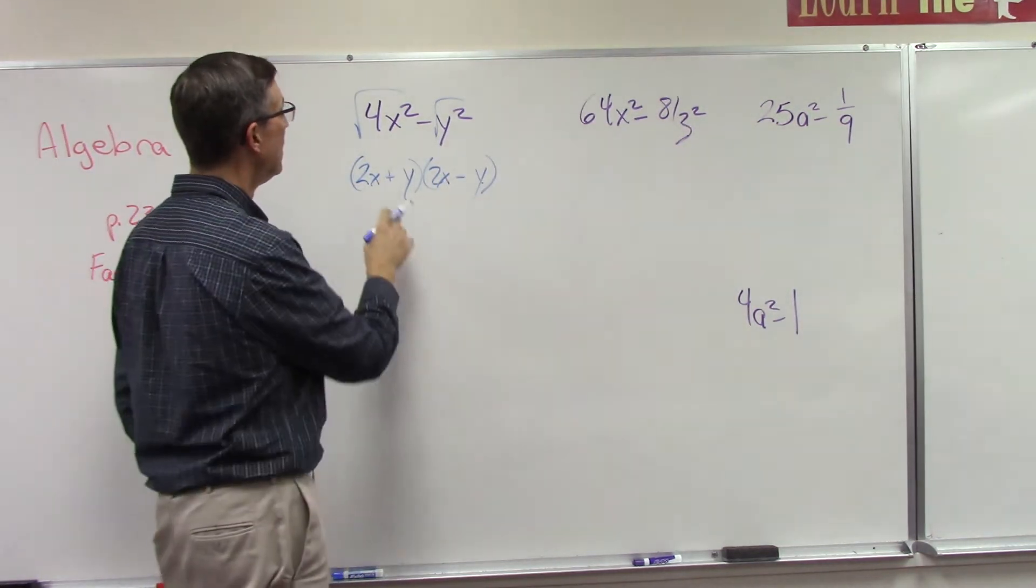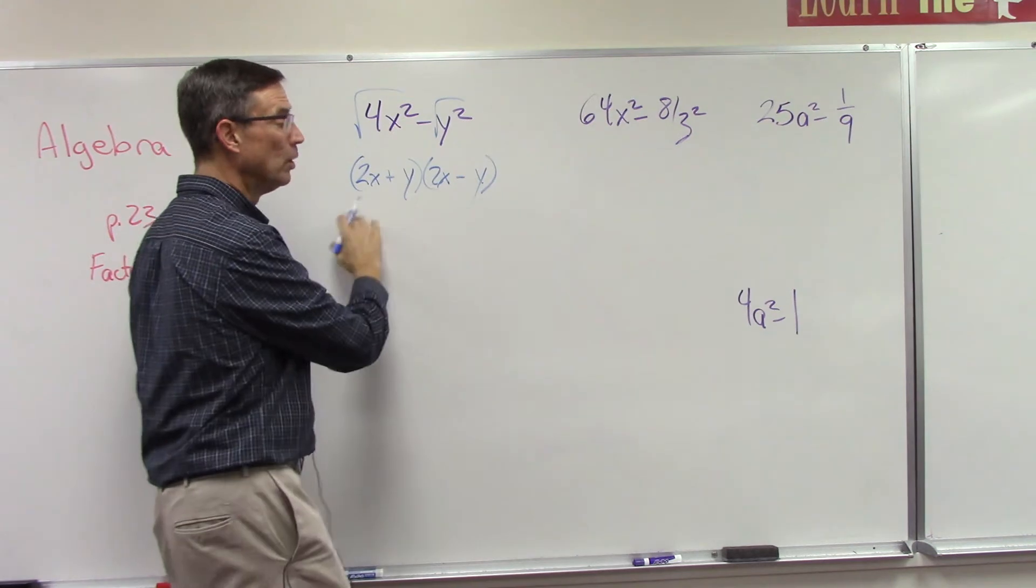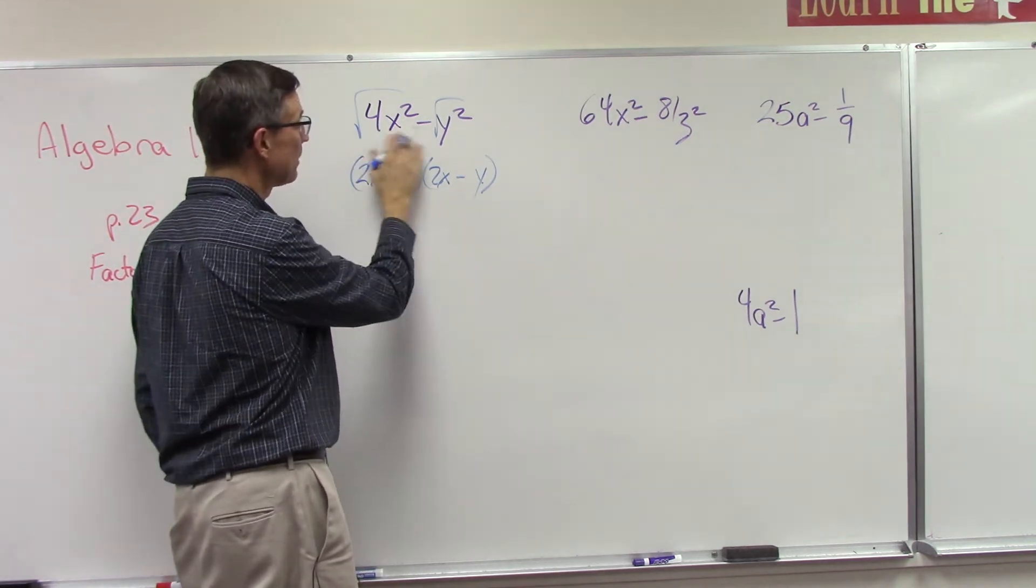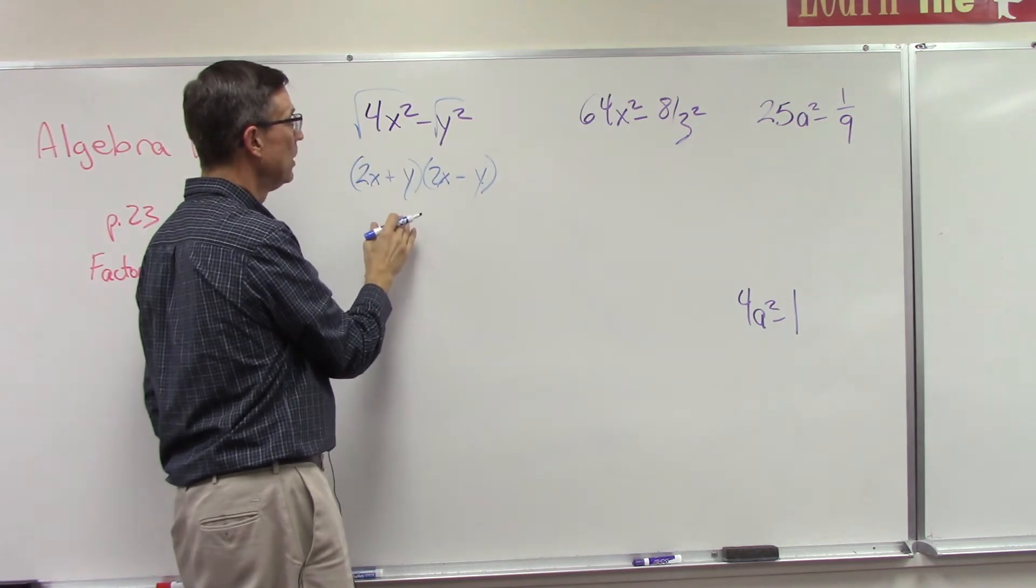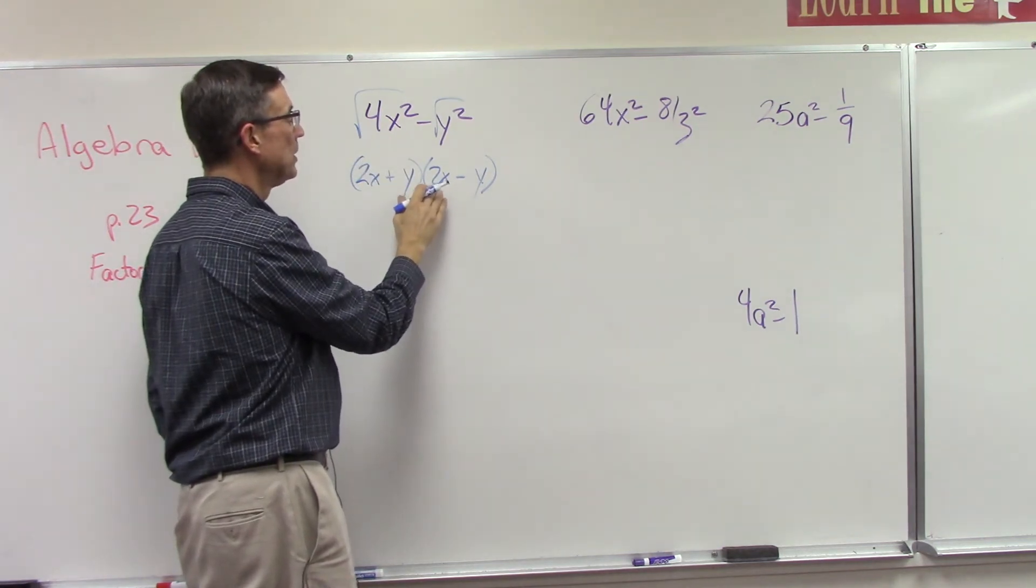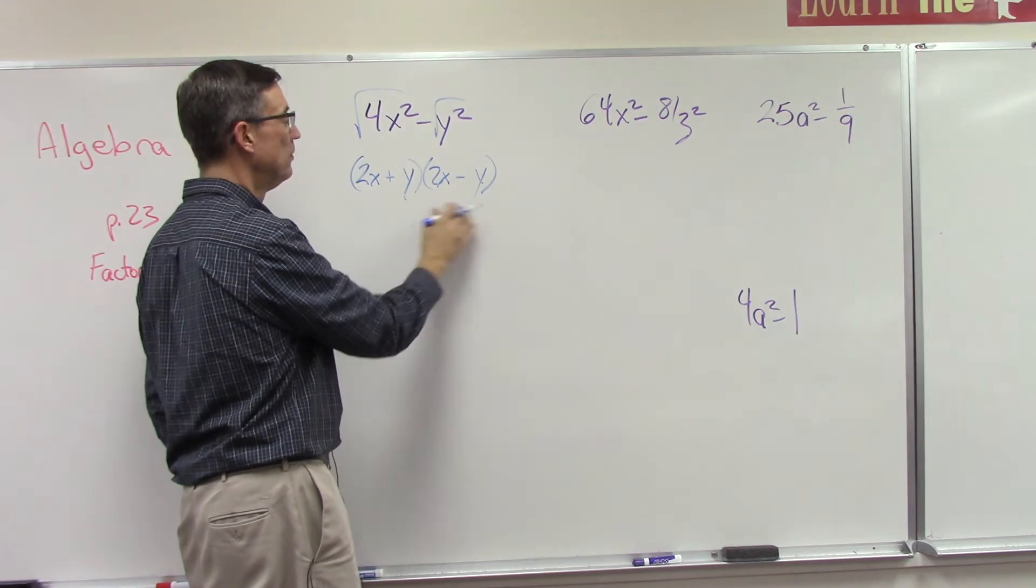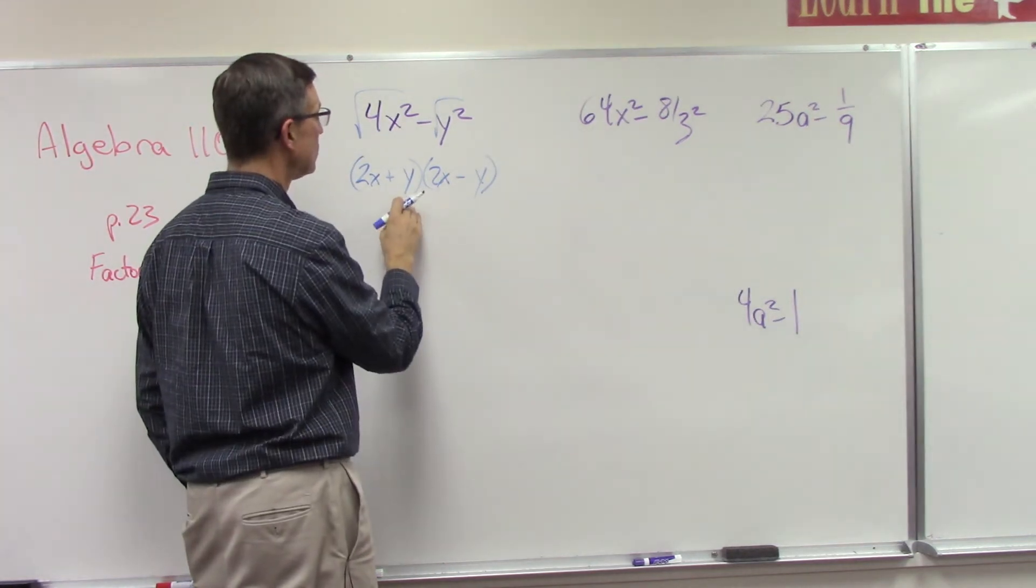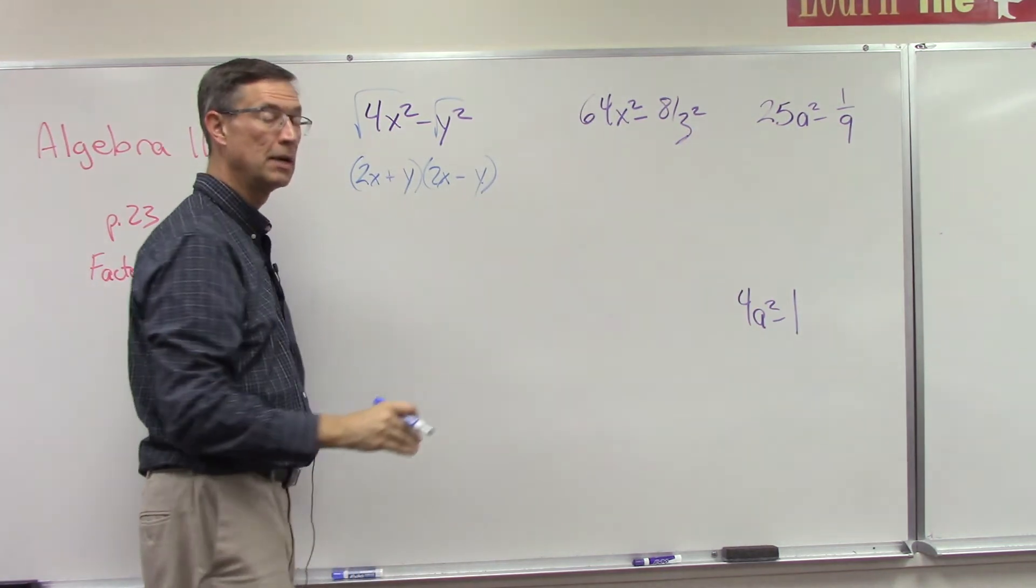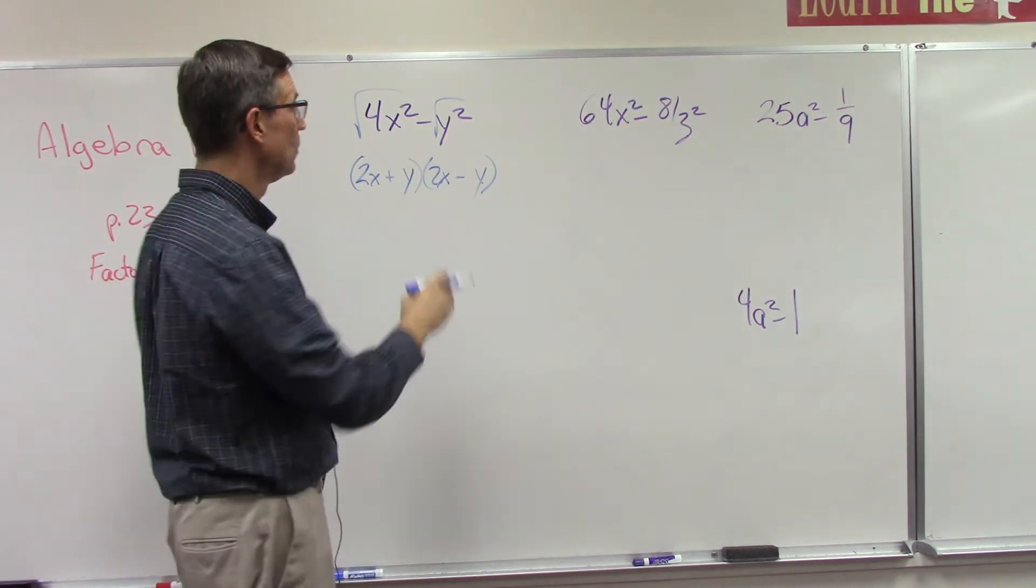And then the last step, real easy, we just do plus and minus. I could do minus and plus, it wouldn't matter which order. But remember, if I do the foil method now to check my work, 2x times 2x is indeed 4x². For the middle term I would get 2xy and negative 2xy, remember the outer and inner. And then for the last term I get plus y times negative y is negative y², and that's what I want. See how easy that is?